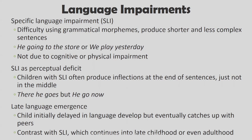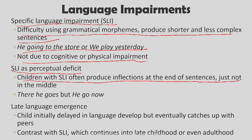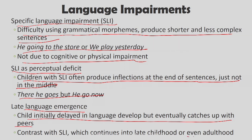Specific Language Impairment (SLI) is a difficulty using grammatical morphemes and producing complex sentences — for example saying 'we play yesterday' — not due to cognitive or physical impairment. Because English inflections and function words are typically short and unstressed, there is debate about whether SLI is truly a syntactic deficit or a perceptual one. Children with SLI often produce inflections at the end of sentences but not in the middle. It is also important to distinguish SLI from late language emergence, a condition in which children are initially delayed in language development but eventually catch up with their peers, in contrast to SLI which continues into late childhood and even adulthood.